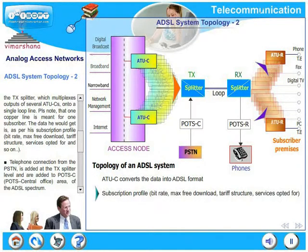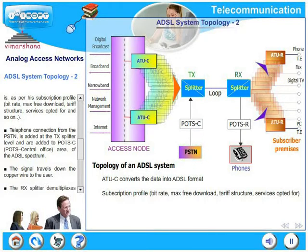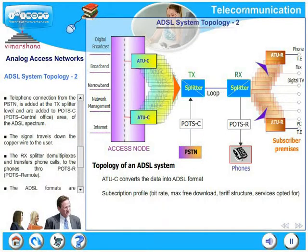The data a subscriber receives is as per his subscription profile, including bitrate, maximum free download, tariff structure, services opted for, and so on. Telephone connections from the PSTN are added at the TX splitter level and are added to part C, the central office area of the ADSL spectrum. The signal then travels down the copper wire all the way to the user.